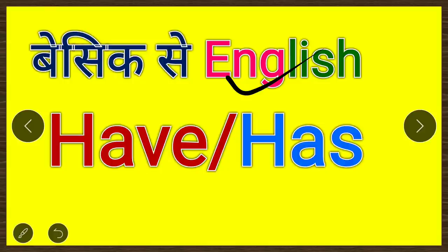In this class, we will learn all the uses of have and has. There is a lot of confusion in your mind about have and has. Sometimes: 'I have a book,' sometimes 'I have written,' sometimes 'I will have written,' sometimes 'I have been written.' Same with has.